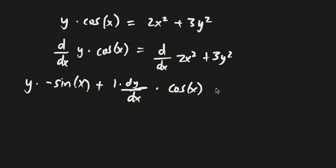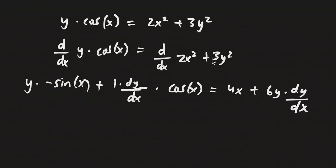This is going to equal 4x plus 6y times dy/dx. I used the sum rule, the constant multiple rule, and the power rule to solve this.